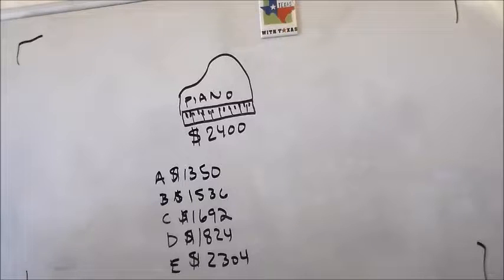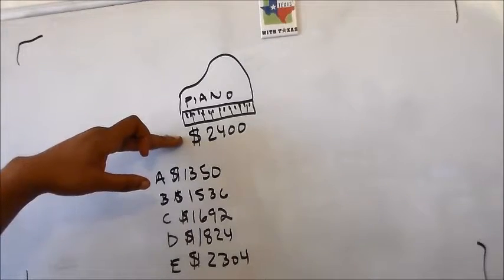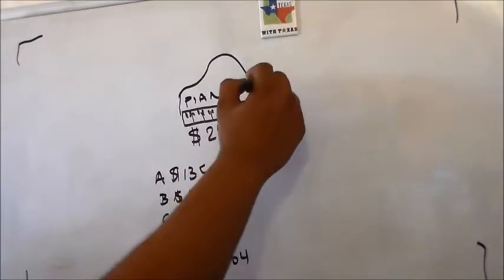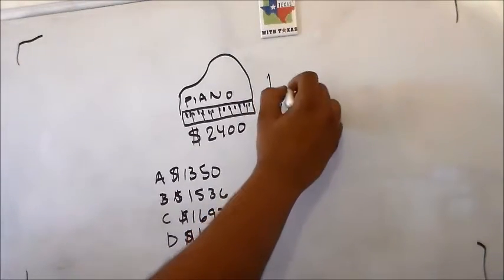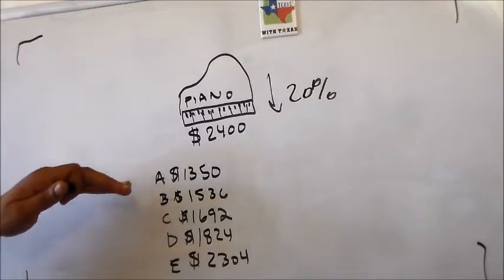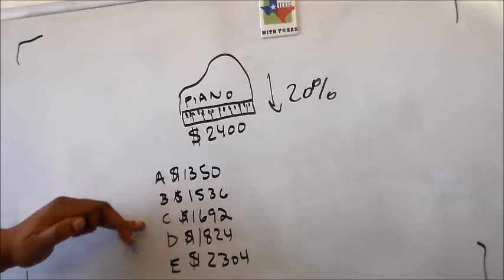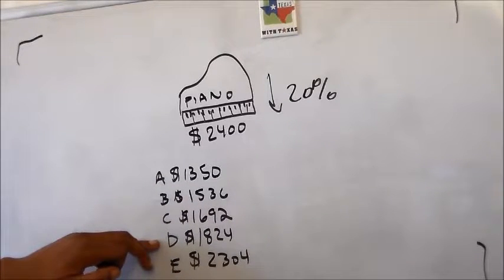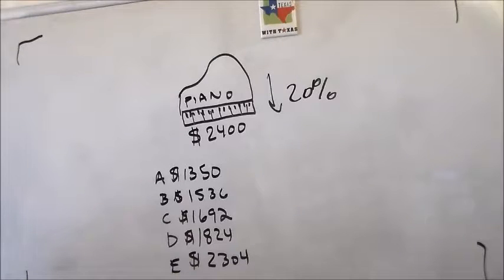The question is asking us, assume that a musical instrument depreciates by 20% of its value each year, what will be the value of a piano purchased for $2,400 after two years? So basically we have a $2,400 piano, and it goes down in value 20% every year. So we want to know what the value is. So our options are A, $1,350, B, $1,536, C, $1,692, D, $1,824, and E, $2,304.